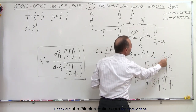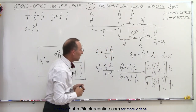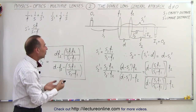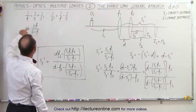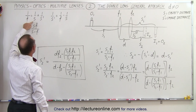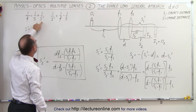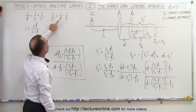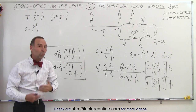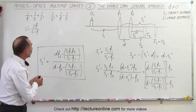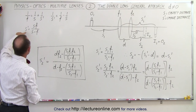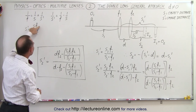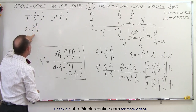So s2 becomes d minus s1'. Now we're going to find the distance to the first image and the distance to the second image using the lens equation, which says 1 over the focal length equals 1 over the object distance plus 1 over the image distance. Solving for image distance: 1 over s' equals 1 over f minus 1 over s, or equivalently s' equals the product of s and f divided by s minus f.